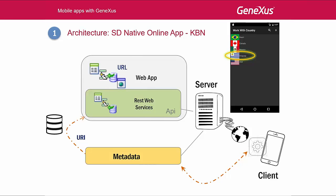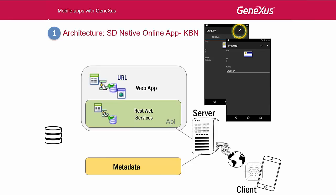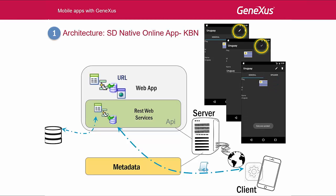Likewise, tapping on an element from the list, such as Uruguay, will call the data provider that returns the country's details to build the view screen. Next, if an update or delete operation is made, or an insert from the list, the edit screen is drawn. And when trying to save, the REST service invoked will be the business component. It will try to run the corresponding operation over the database, and will return the operation's result to the caller. If it failed, the error messages will be displayed to the user on the device screen. If it was successful, the corresponding message will be shown.